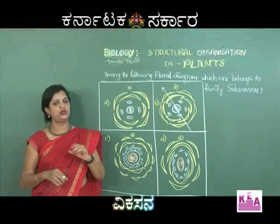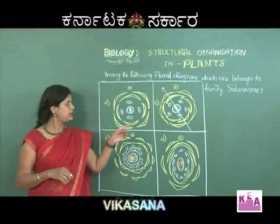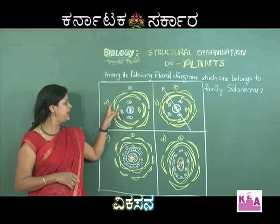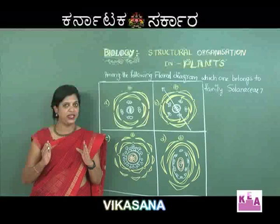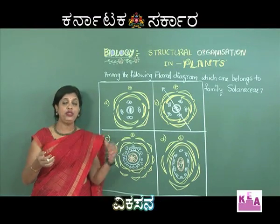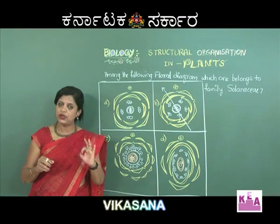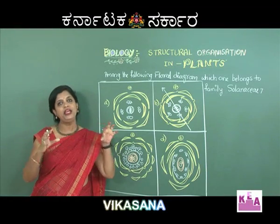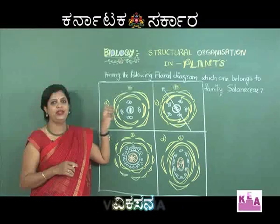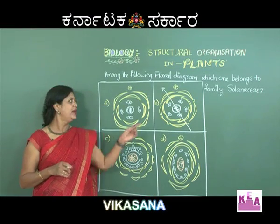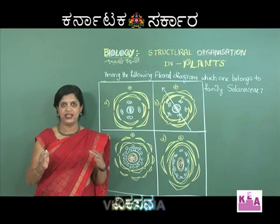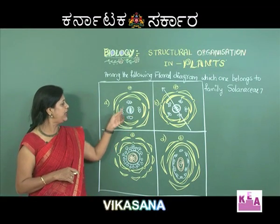In diagram A, there are 4 sepals and 4 petals arranged side by side without overlapping — this is called valvate estivation. The units are separated, not combined, so this is a polysepalous and polypetalous condition with valvate estivation. This is a tetramerous flower.